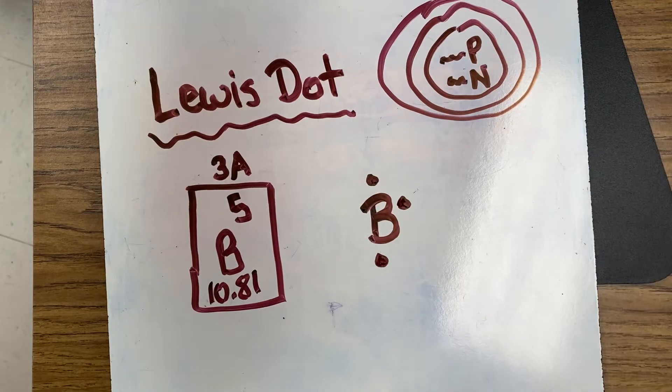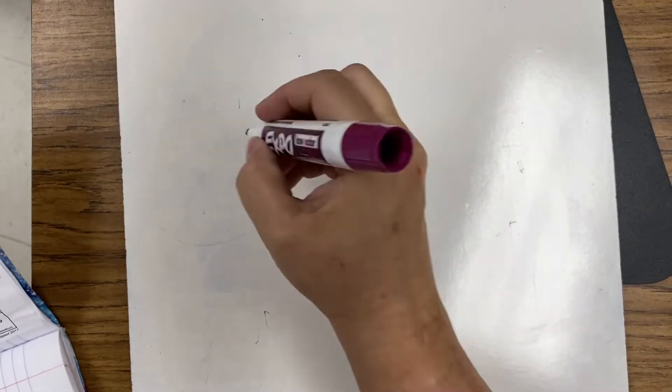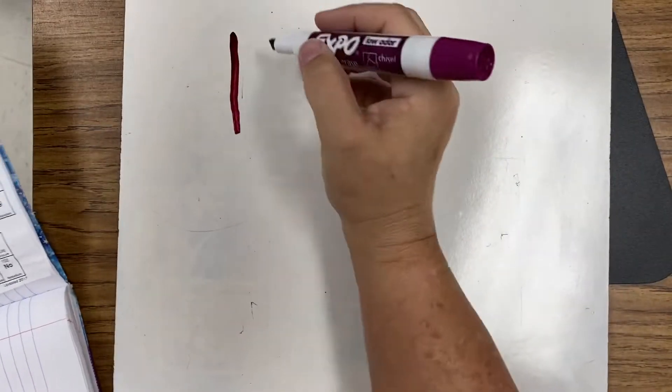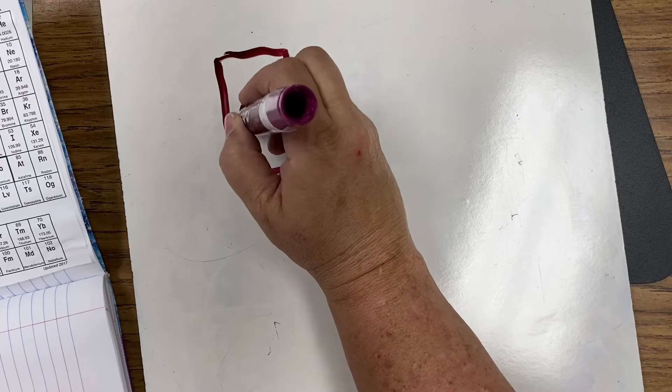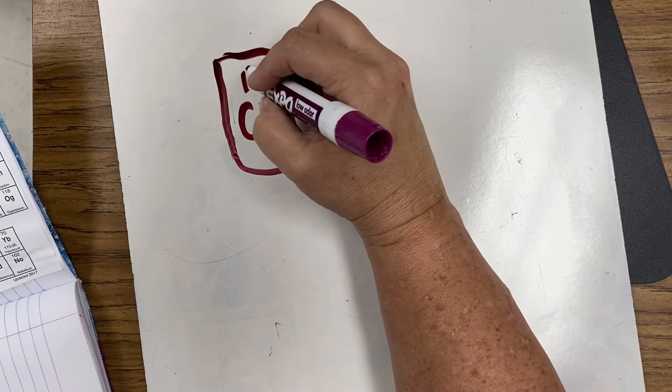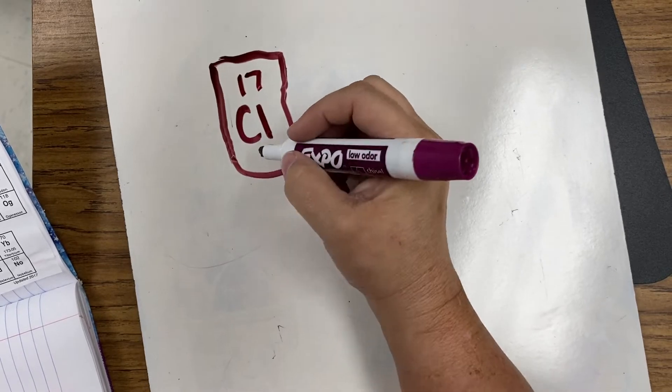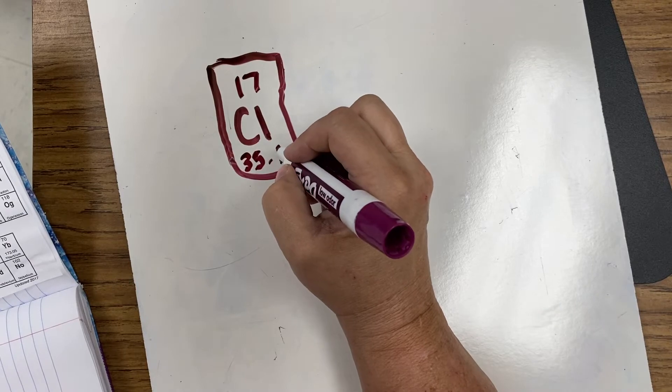That's pretty easy, right? So then, if we look at one of the other elements. So let's say we're going to do chlorine. Okay, so I've got my box, Cl for chlorine, and it's 17, and it is 35.45.